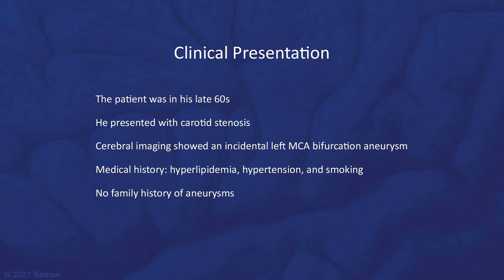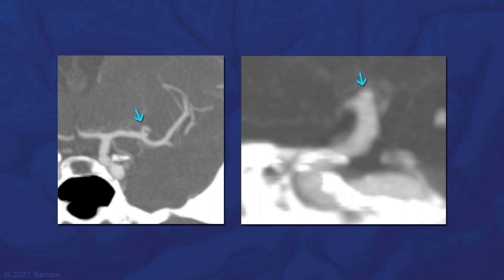These aneurysms were identified. On the left, you see a very small middle cerebral artery bifurcation aneurysm pointing laterally. On the right, you see a sagittal view of the carotid terminus with an aneurysm projecting superiorly.